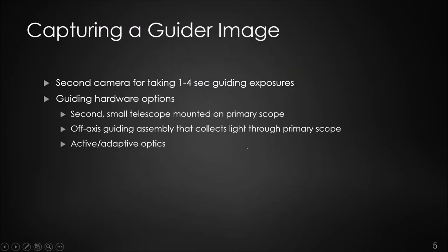How do we get the guiding image used for measuring star positions? You need a second camera or at least a second sensor, because you'll be taking short one-to-five-second exposures independently from the long exposure on your main camera. The question is how to get light into this guide camera. The first option — the one nearly everyone tries first — is to use a secondary telescope, typically a small or medium-sized refractor, with the guide camera attached.